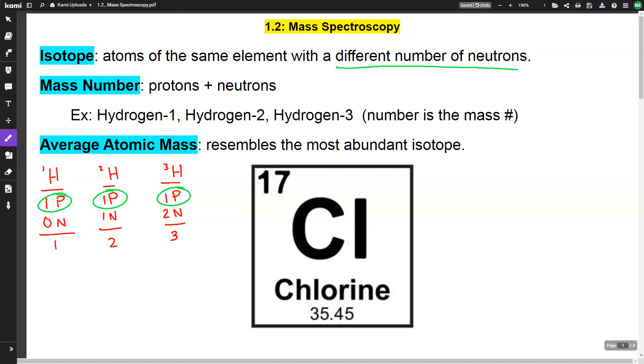Average atomic mass resembles the most abundant isotope. Chlorine has an average atomic mass of 35.45 atomic mass units. That's what you see on the periodic table.